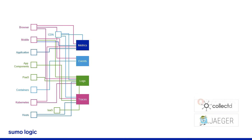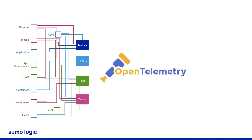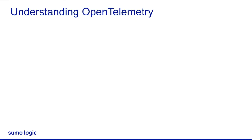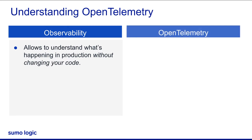OpenTelemetry is becoming the gold standard to collect all of your machine data. In simple words, observability is what allows you to understand what's happening in production without changing your code. You can think of OpenTelemetry as the first step in any observability strategy — it provides a high-quality, vendor-neutral framework to collect all observability signals.